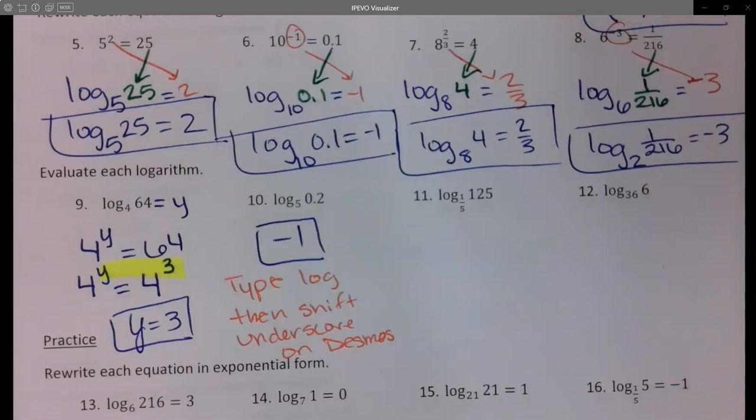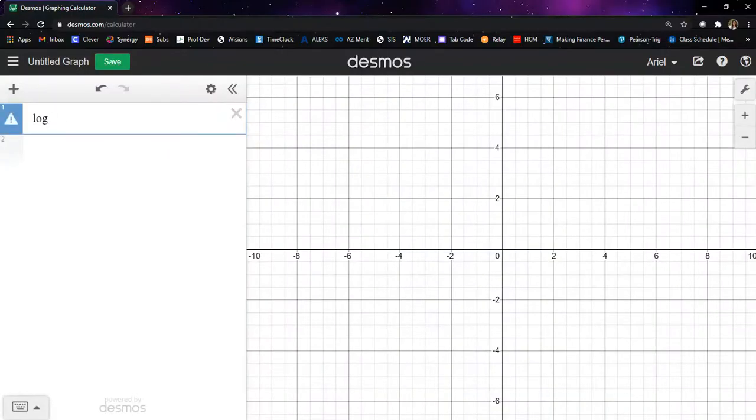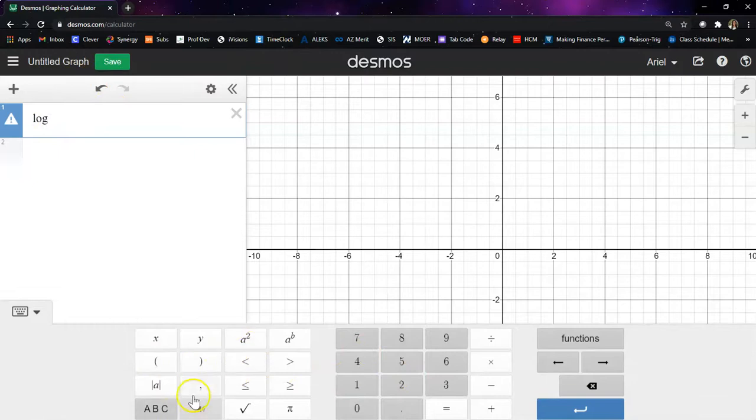So I can go ahead and do the same thing for number 11. I want log base 1/5. I'll do 0.2. I don't know why it's not when we do the log base of a fraction. So 1/5 equals 0.2, which gives me negative 3.